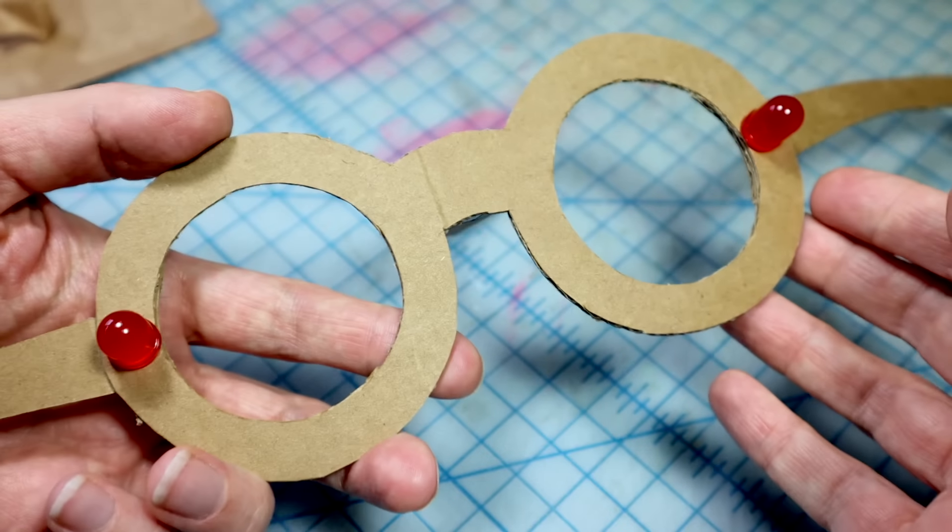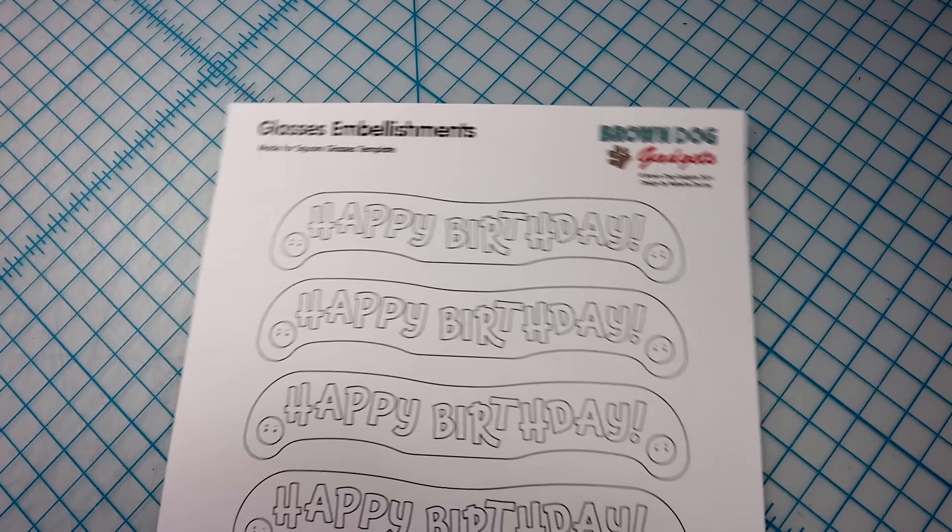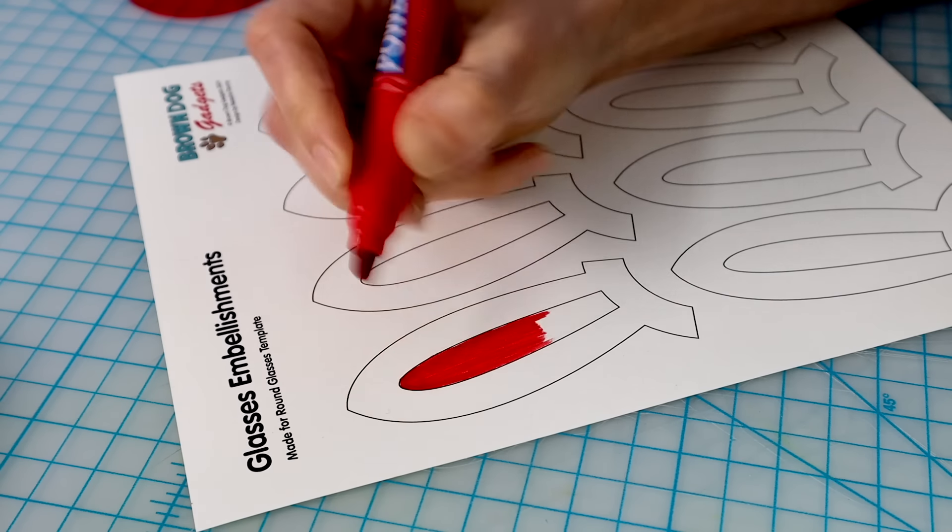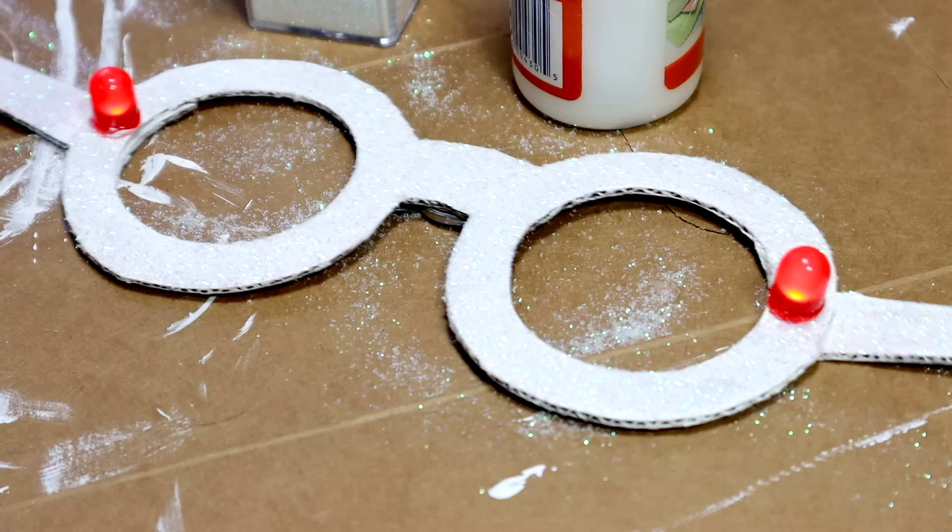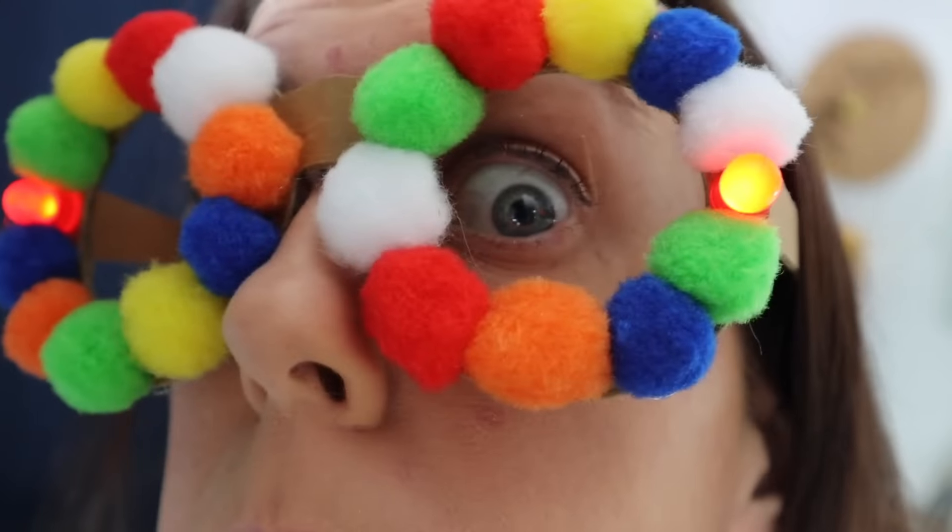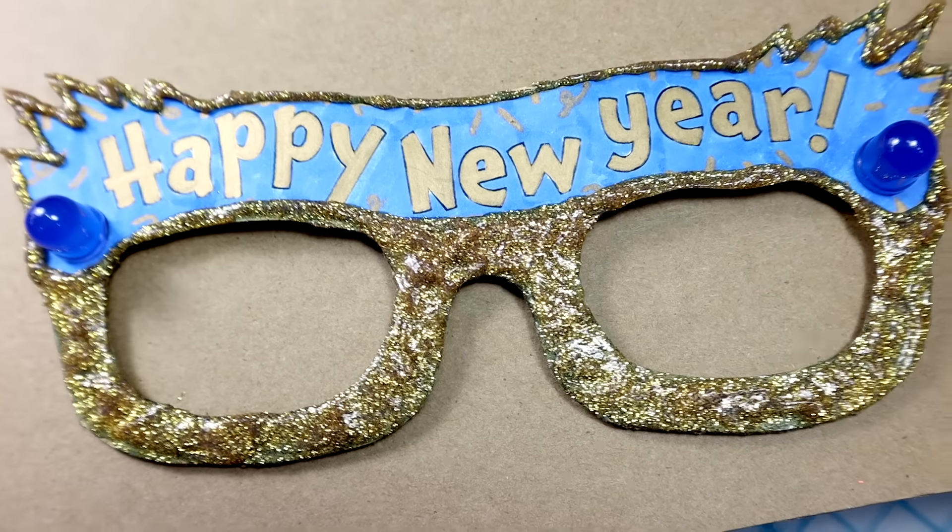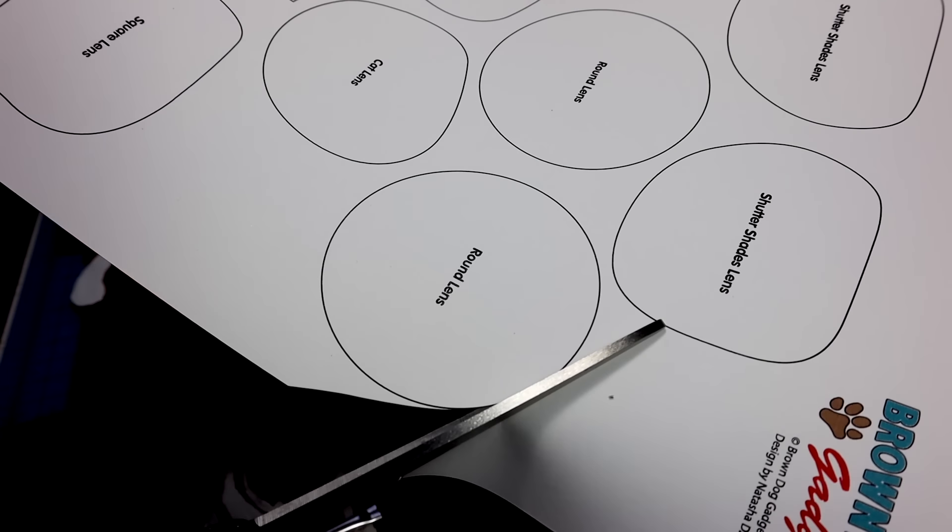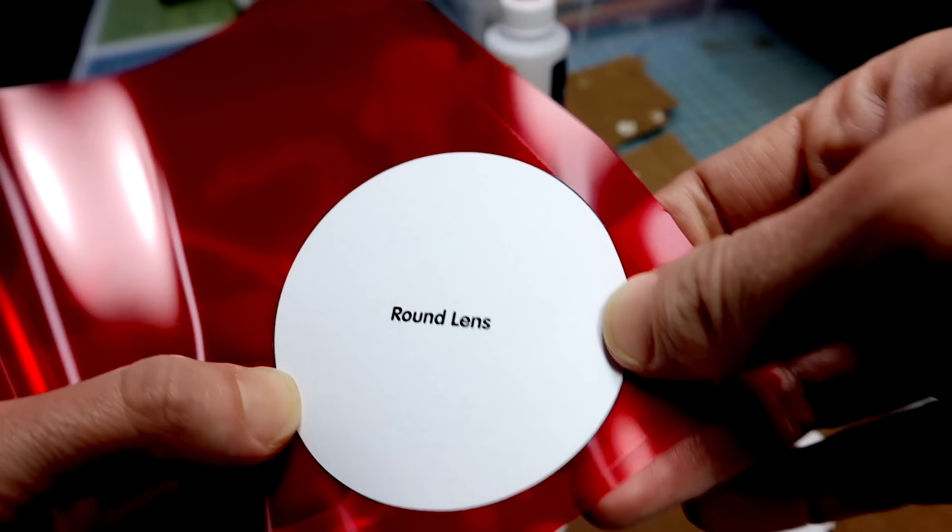Now it's time to decorate. We've included embellishment templates to create party wear for holidays throughout the year, or use common craft supplies like glitter, rhinestones, glitter glue, or pom-poms to complete your look. If you'd like, you could also add lenses using clear material and our lenses template.